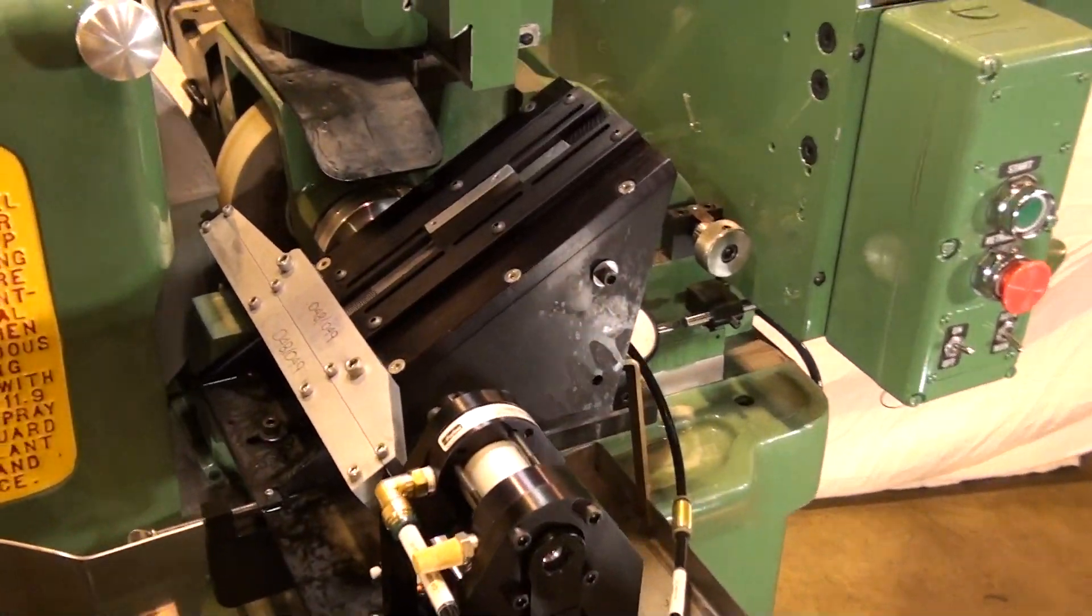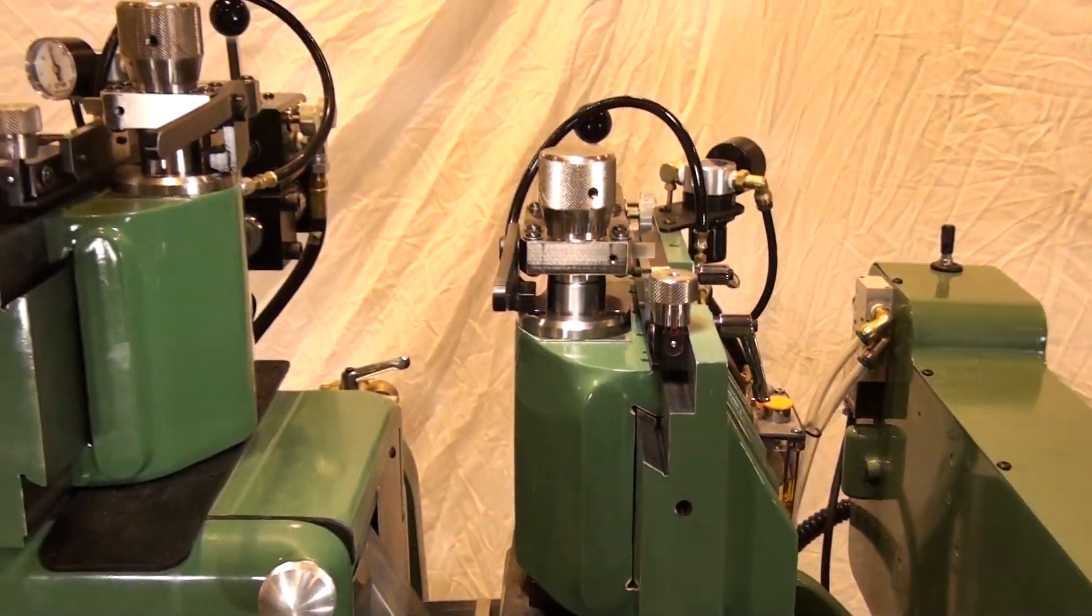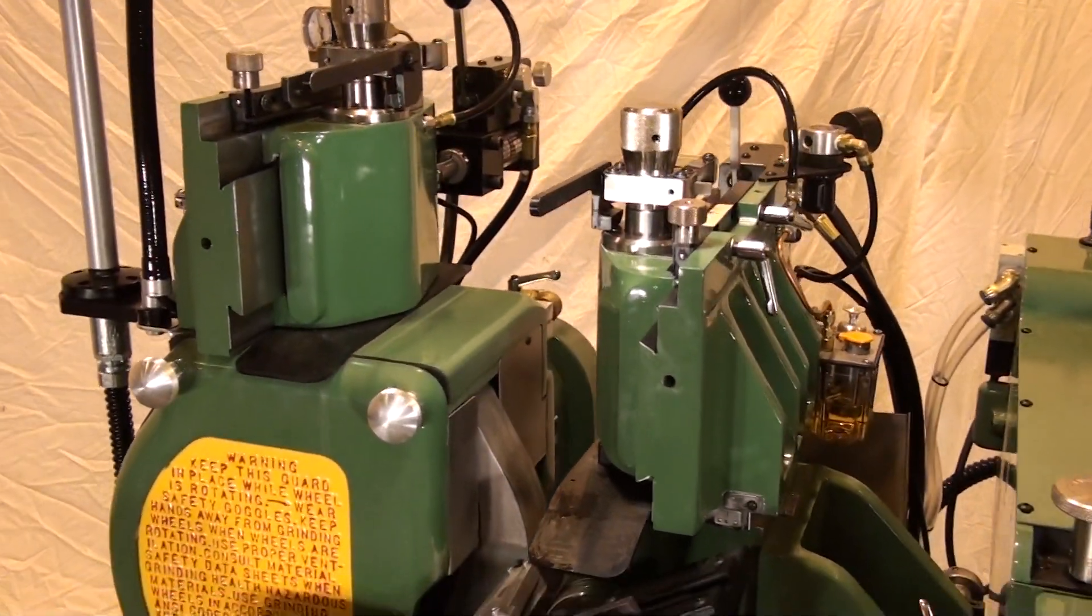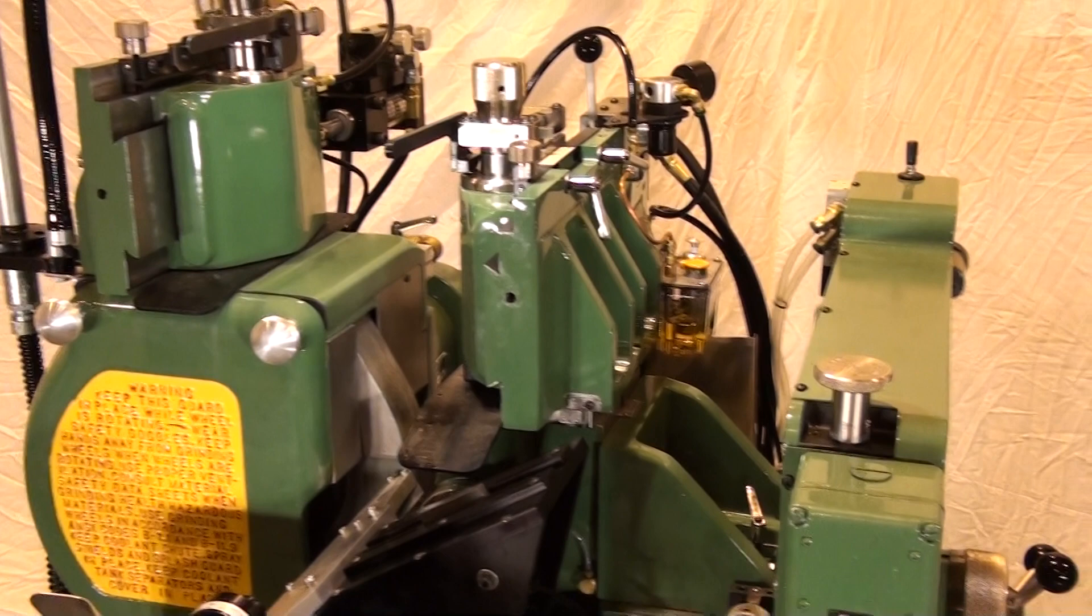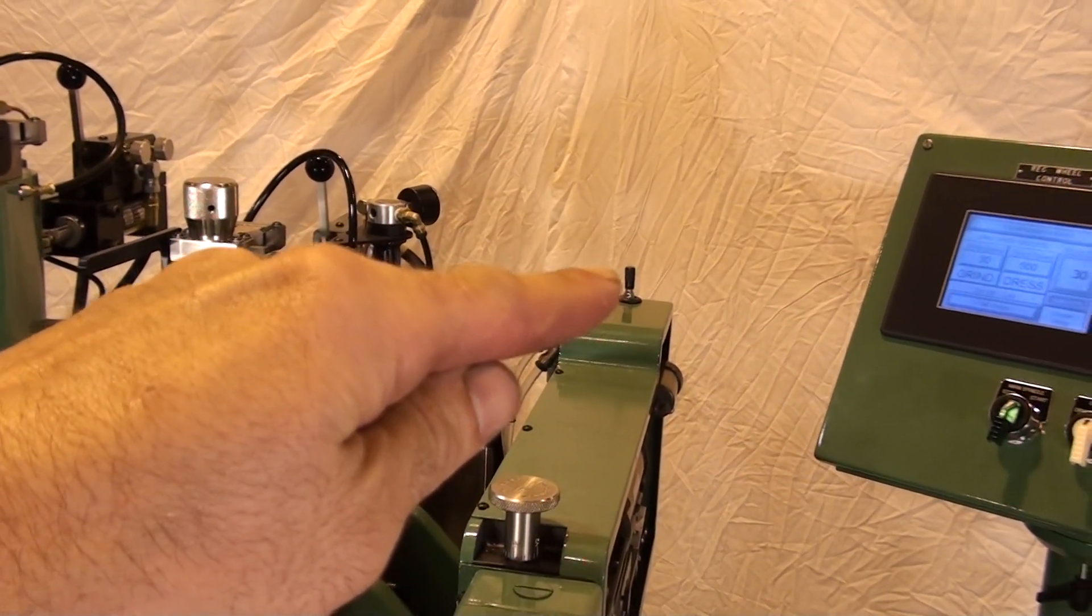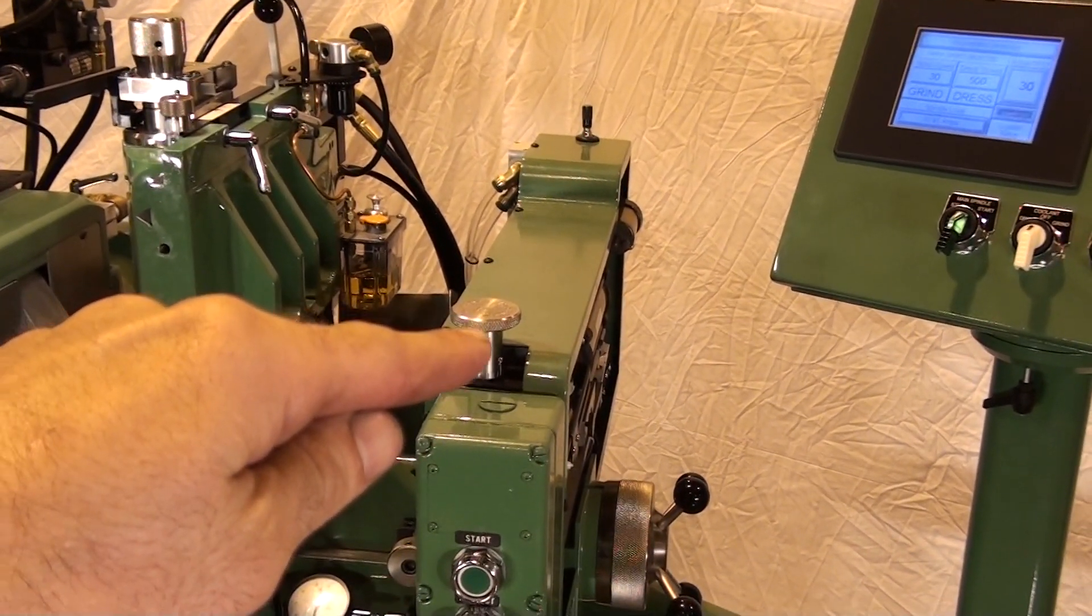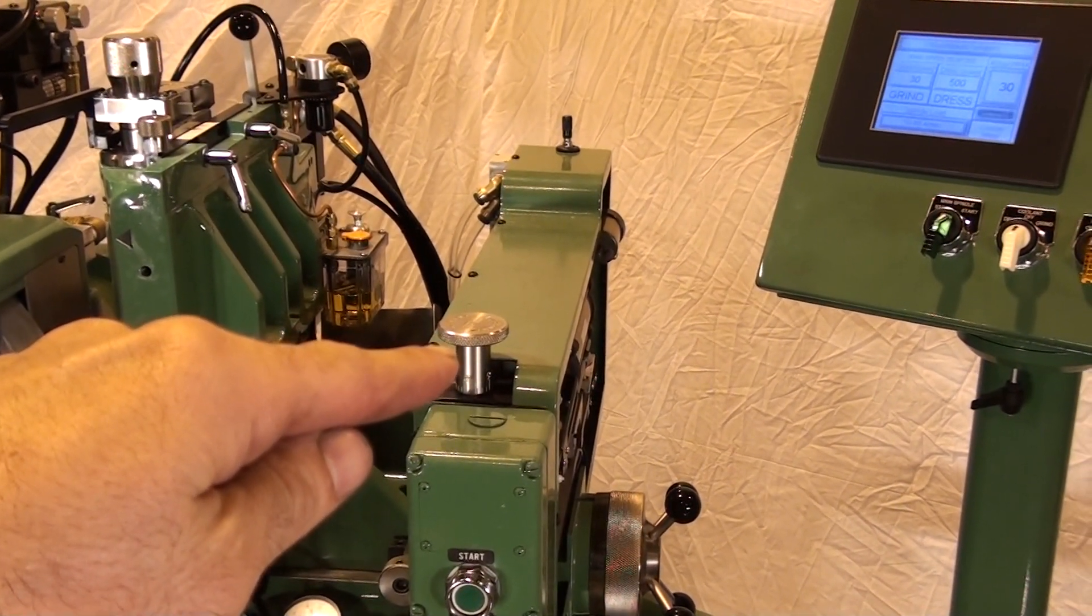This machine is upgraded to have air dressing units on both the work wheel and the regulating wheel. The precision hydro jet tile provides more fine control of the grind rate. The micro size adjustment on the final part sizing provides ten millionths step on the adjustment dial.